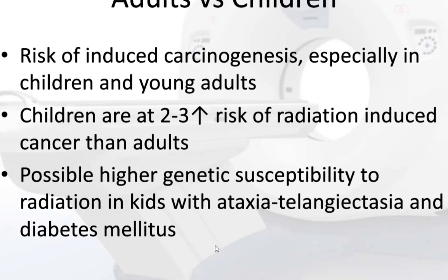Regarding adults versus children: with children we worry more about induced carcinogenesis. Children are more radiosensitive and are at two to three times increased risk of radiation-induced cancer than adults. There is also possible higher genetic susceptibility to radiation in kids with ataxia telangiectasia and diabetes.